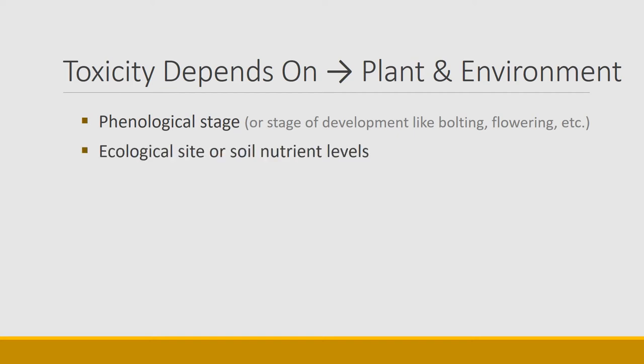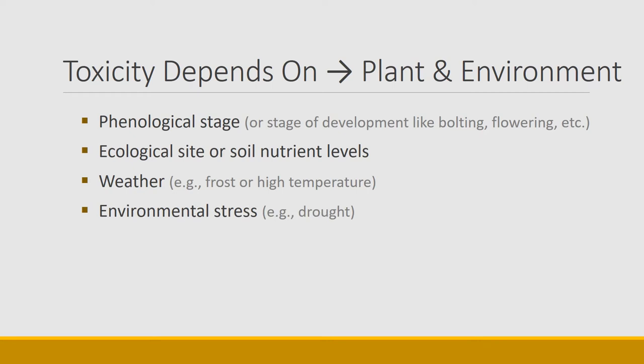Toxicity can be affected by nutrient levels — nitrate-accumulating plants are an example of plants that are more toxic on some sites than others. Weather also plays a role: there's a whole series of plants that are fine all the time, and then all of a sudden a frost will make compounds in the plant form toxic compounds. Heat can also cause some plants to become toxic as they get hot and dry. Environmental stress such as drought can similarly cause plants to become toxic. And toxicity may also depend on plant parts — stems, seeds, roots, or other parts of the plant.